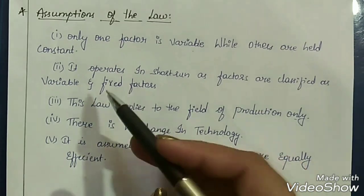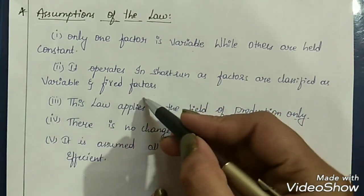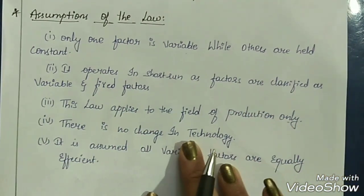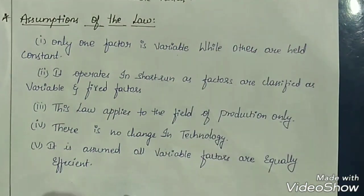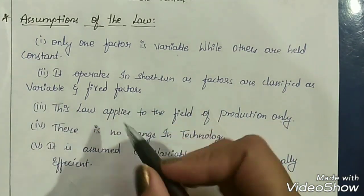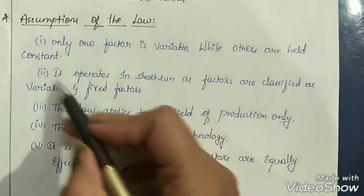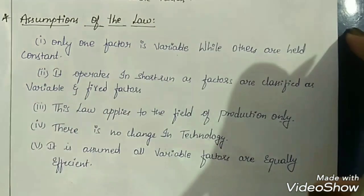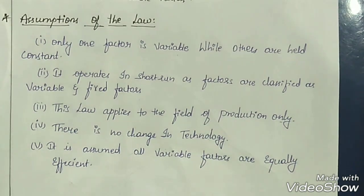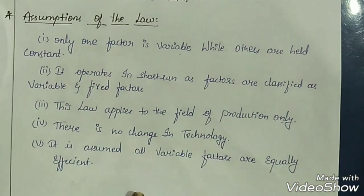Second assumption: this law operates in the short run, as factors are classified as variable and fixed. This law operates only in the short run because we can classify factors as variable and fixed only in the short run. In the long run production function, there are all variable factors only — no fixed factors. So this law operates only in the short run production function.